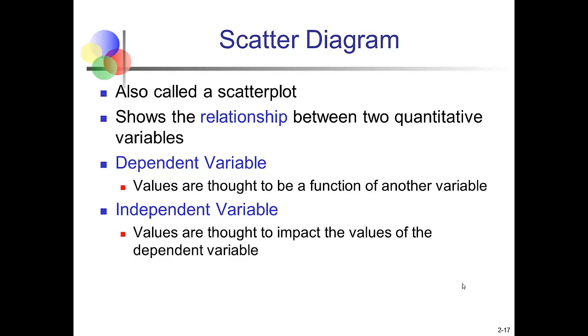The scatter diagram is also called a scatter plot. It allows us to see the relationship between two quantitative variables. So we have special names for those variables. The dependent variable is the variable we're interested in learning about. It's the thing that we think is responding to other variables. So we believe its values are a function of other variables. The independent variable are variables that we believe impact the values of that dependent variable.